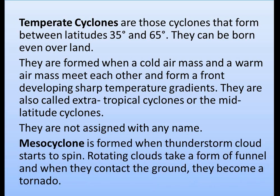A mesocyclone is formed when thunderstorm clouds start to spin. These rotating clouds take the form of a funnel, and when they contact the ground, they become a tornado. In simple terms, a tornado is a spinning column of air that is in contact with the surface of the earth and a cumulonimbus cloud.